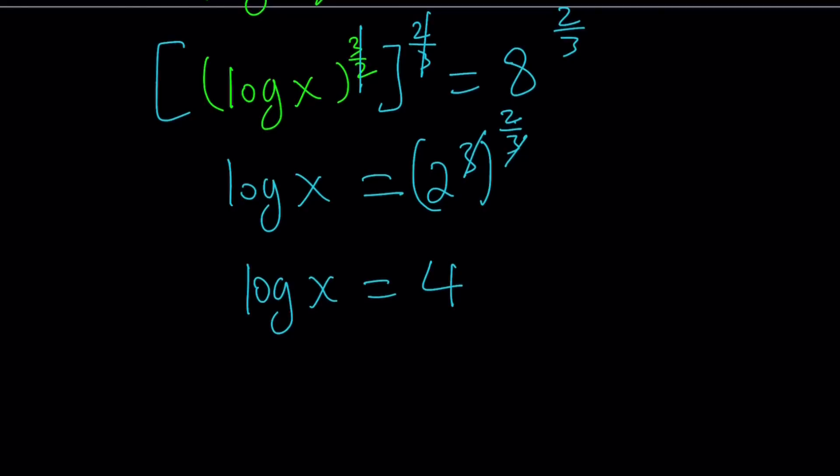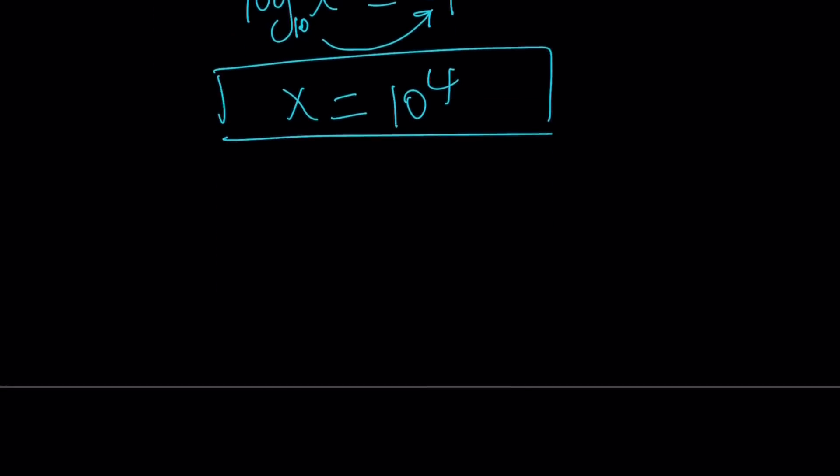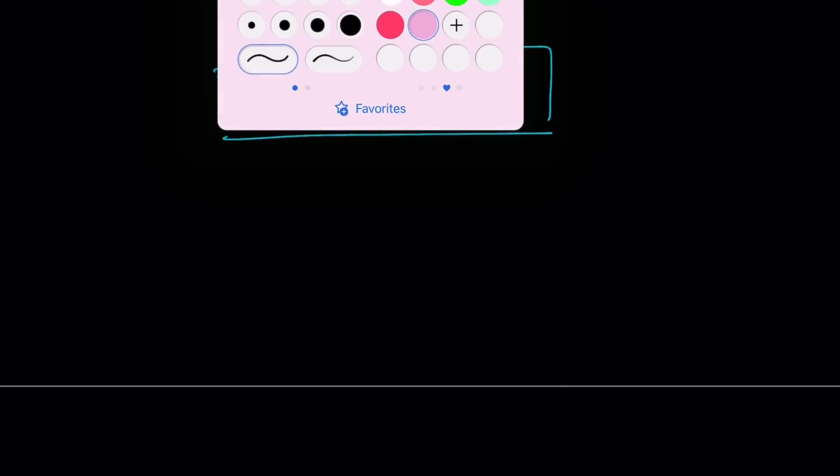What about x? By using the definition of logarithm, since the base is 10 and it's not written most of the time, we can use the definition, which tells us x equals 10 to the fourth power. Awesome. So x can also be written as 10,000. And let's go ahead and talk about the second method.